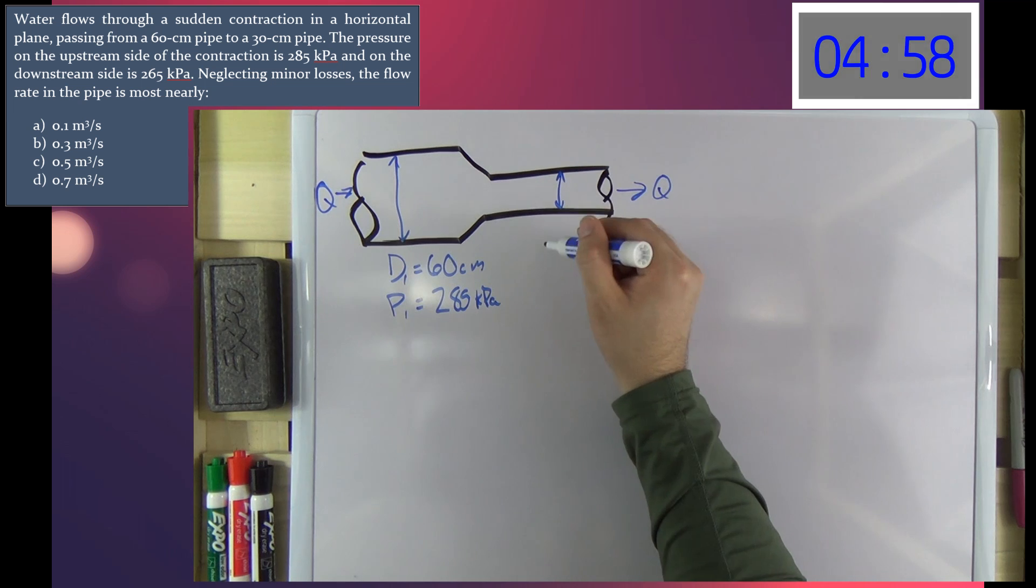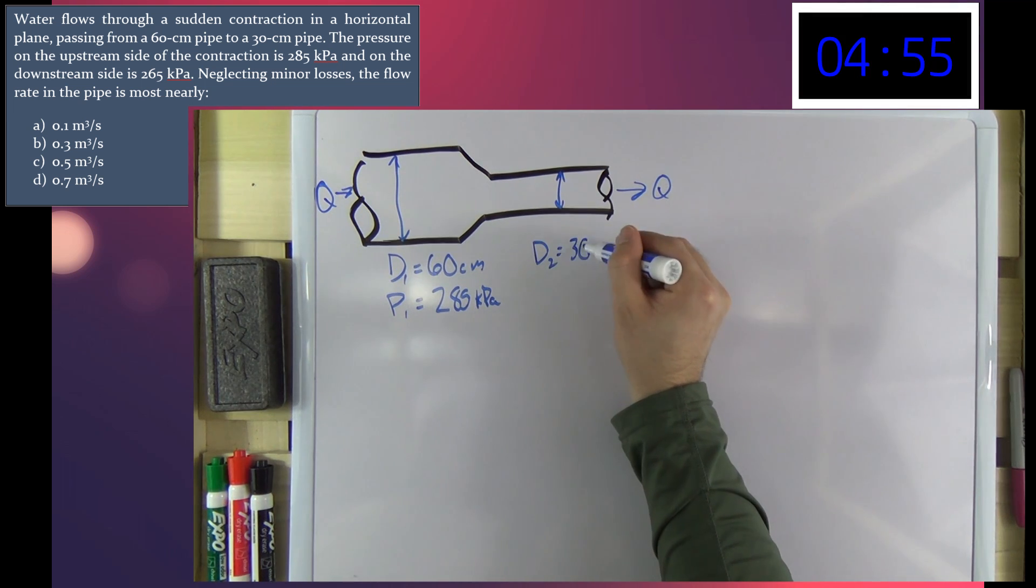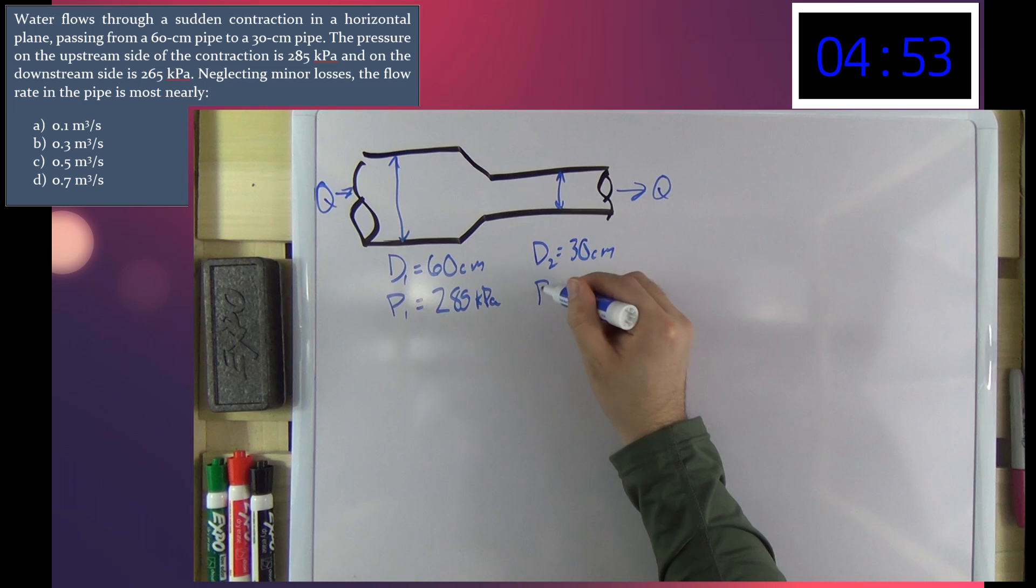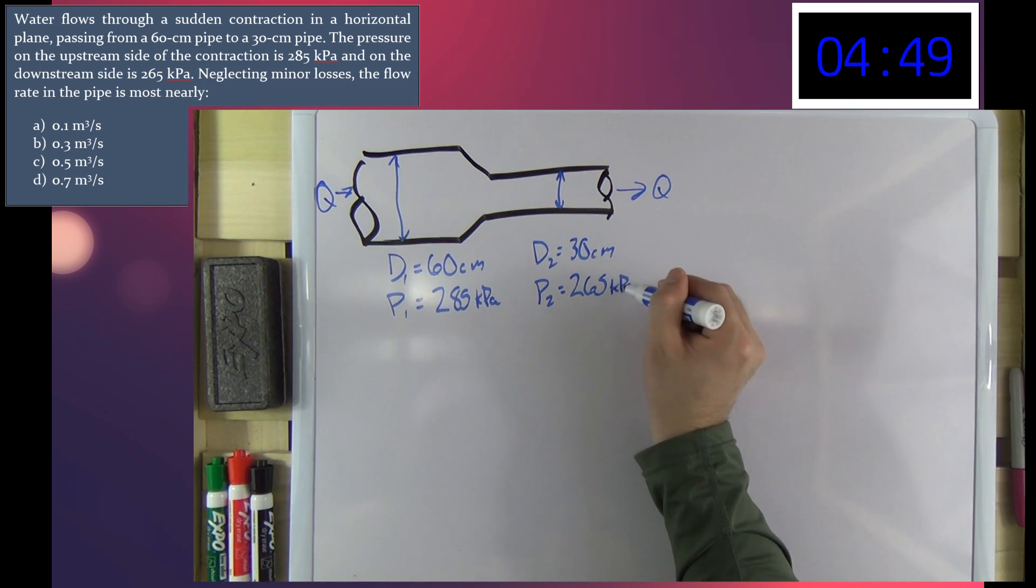And downstream we've got D2 equal to 30 centimeters, and P2 equal to 265 kilopascals.